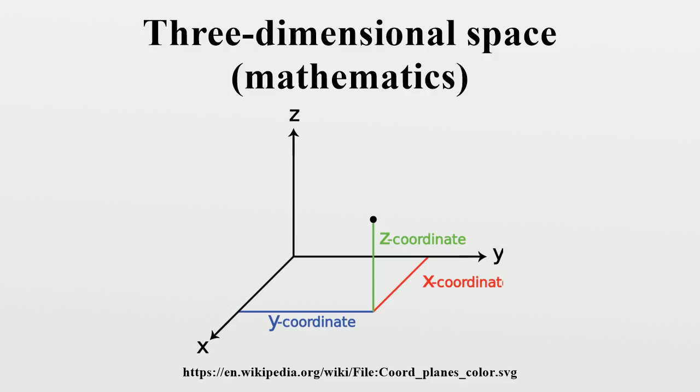In linear algebra, another mathematical way of viewing three-dimensional space is found in linear algebra, where the idea of independence is crucial. Space has three dimensions because the length of a box is independent of its width or breadth. In the technical language of linear algebra, space is three-dimensional because every point in space can be described by a linear combination of three independent vectors.